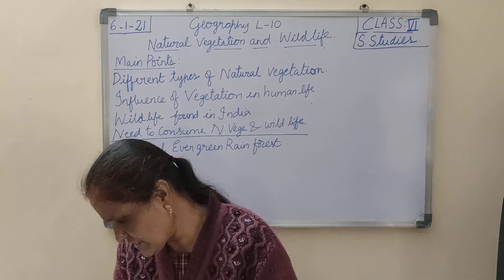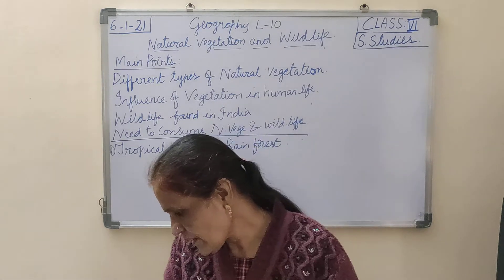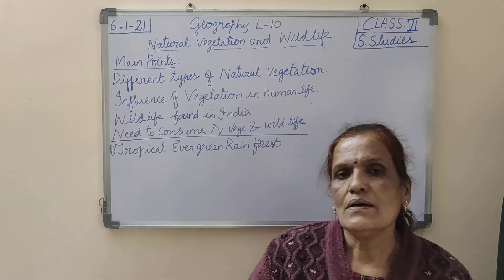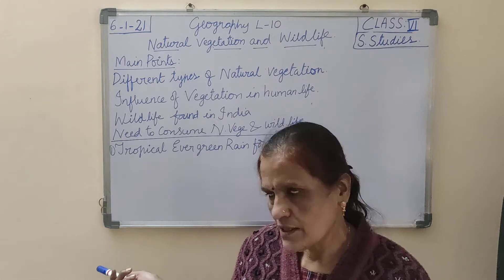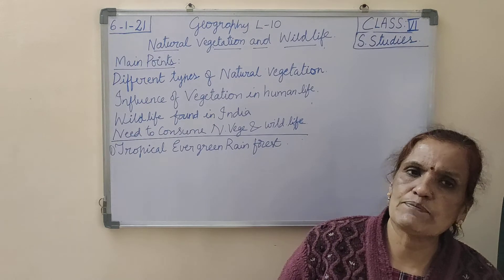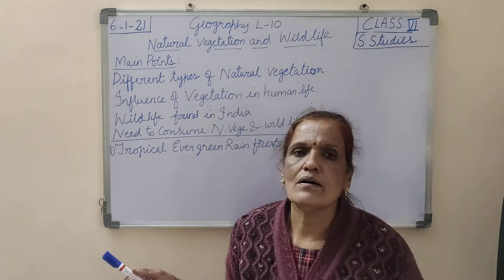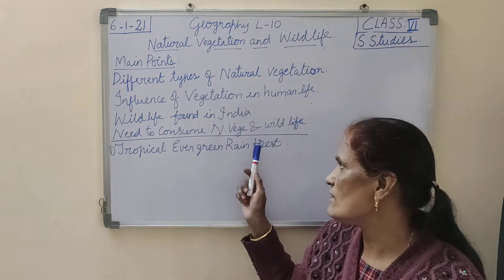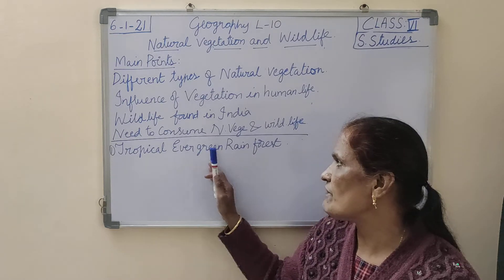The trees which are found in tropical evergreen rainforests include ebony, mahogany, rosewood, and bamboo. Apart from these four, there are many other trees found in this area. The main important trees are ebony, mahogany, rosewood, and bamboo. The rainfall is nearing 200 centimeters. In detail, we will study this from the book — I have given you brief and important points of tropical evergreen rainforest.